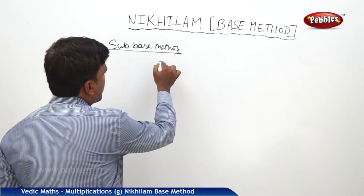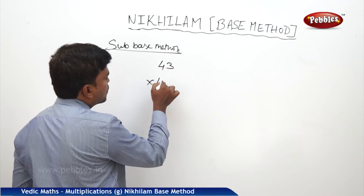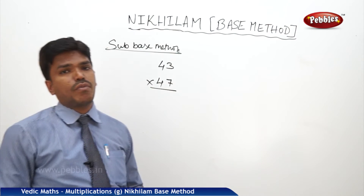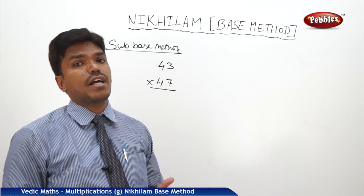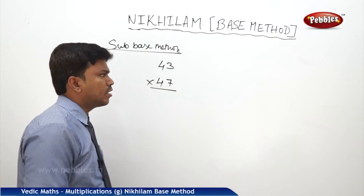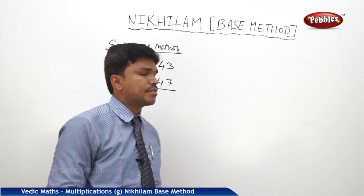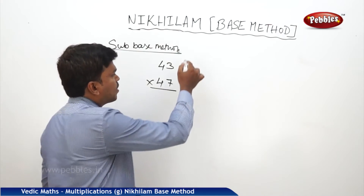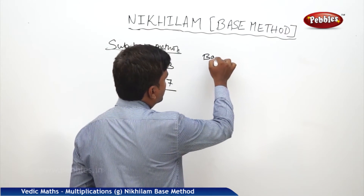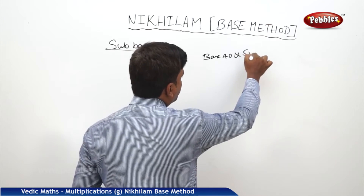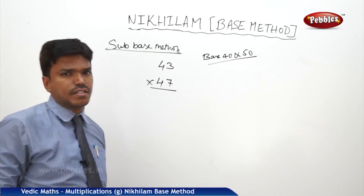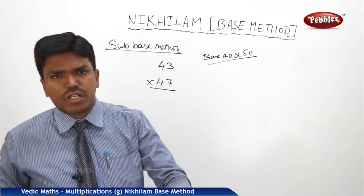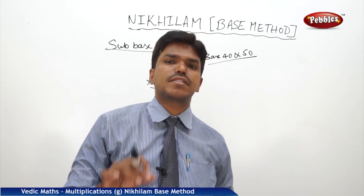For example, let us take 43 into 47. It is very important which one you are going to take as base. For these two numbers I can take two bases — base 50 or base 40. Either of the bases you can take; you are going to get the same answer.